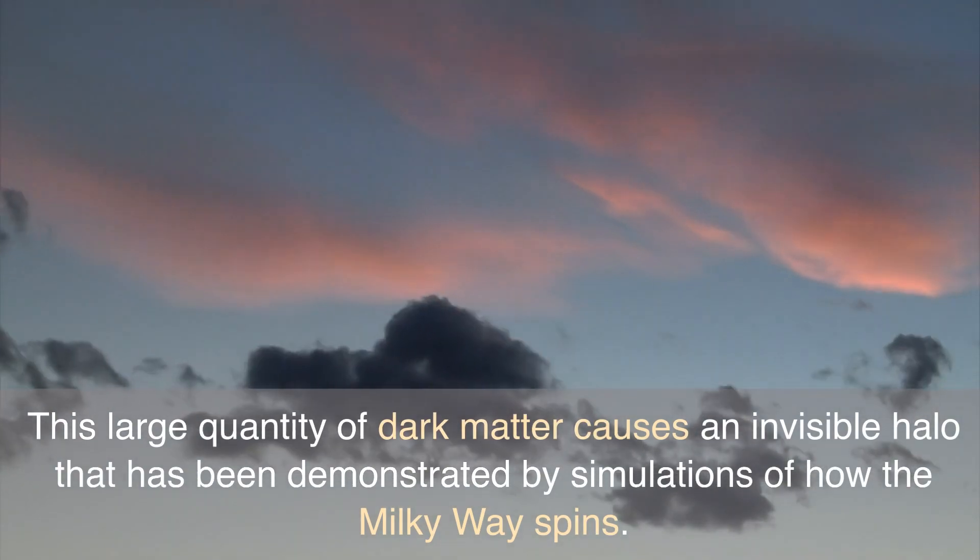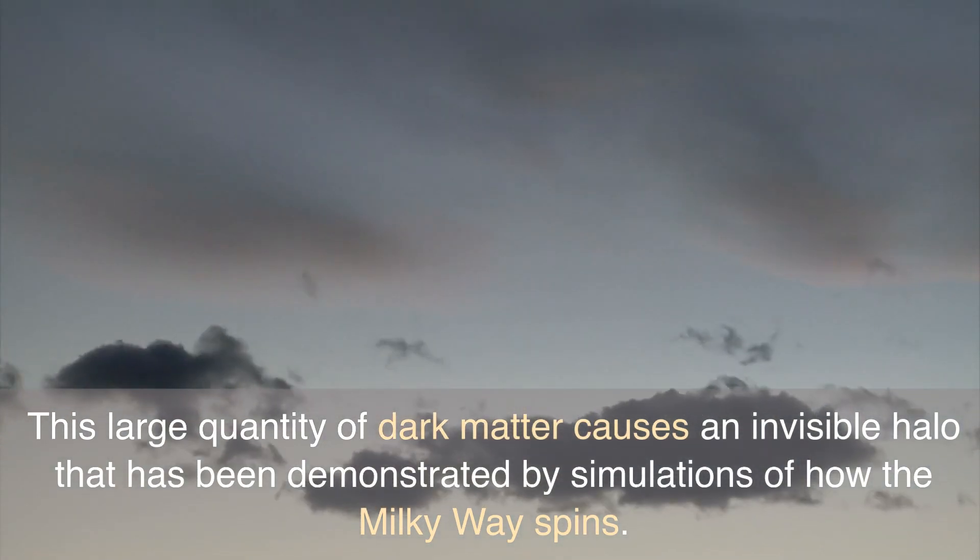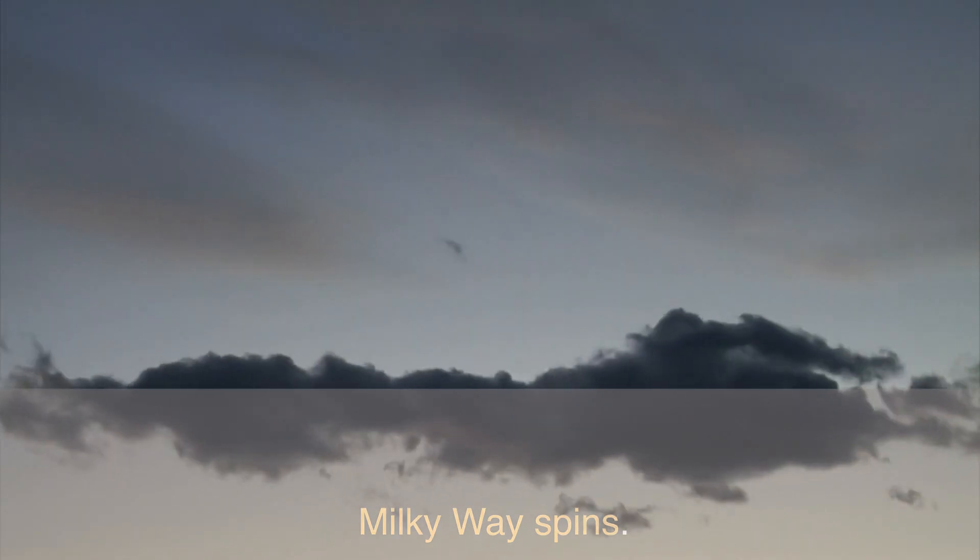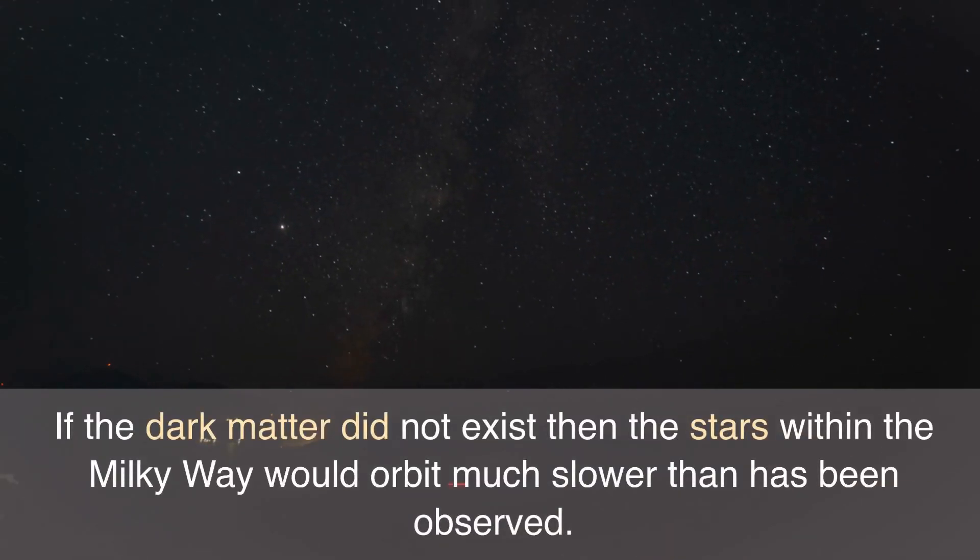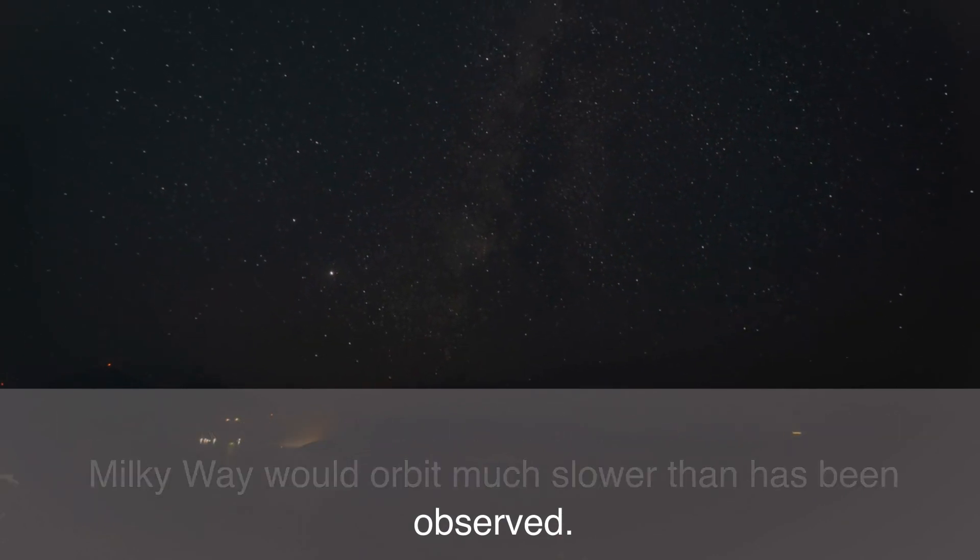This large quantity of dark matter causes an invisible halo that has been demonstrated by simulations of how the Milky Way spins. If the dark matter did not exist, then the stars within the Milky Way would orbit much slower than has been observed.